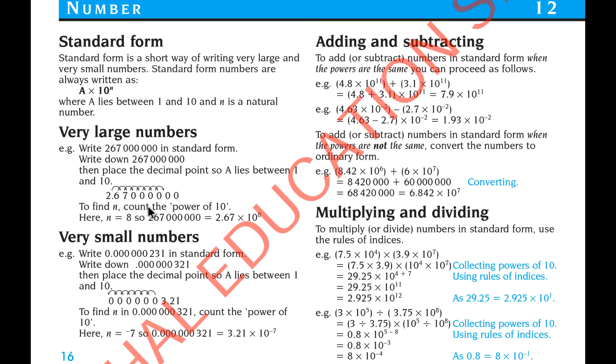To find N, count the number power of 10. Here N is 8, so 267 million equals 2.67 multiplied 10 to the power 8. So actually value will never change. Only the way of writing format only changes. The value stays same.